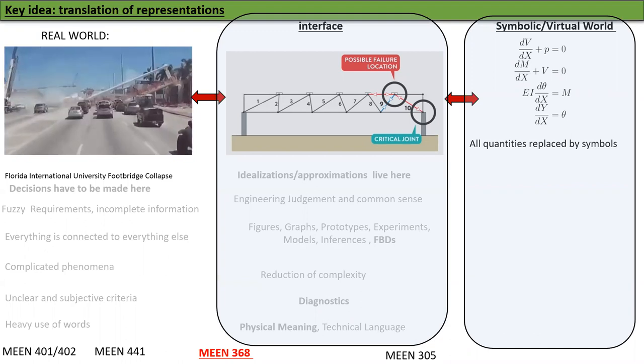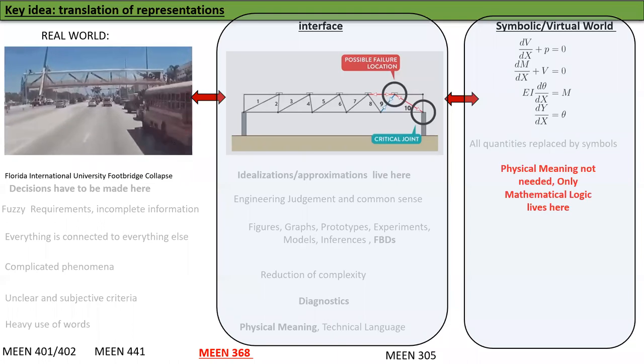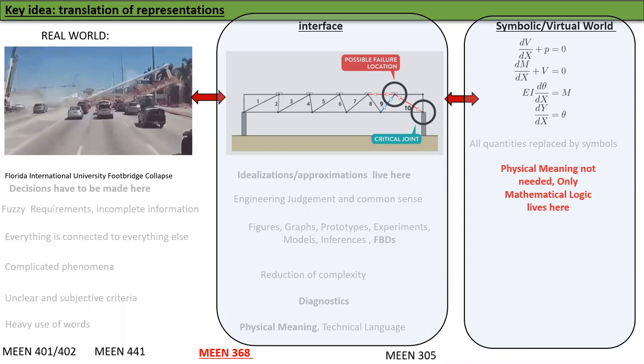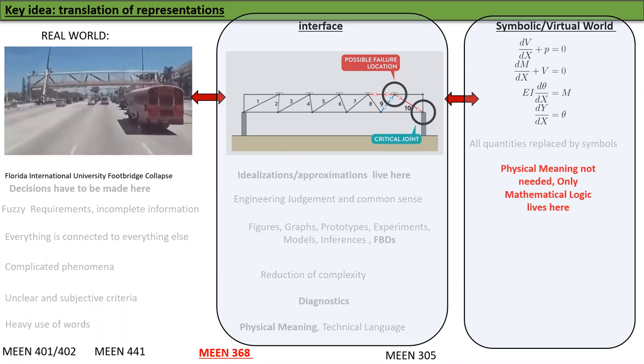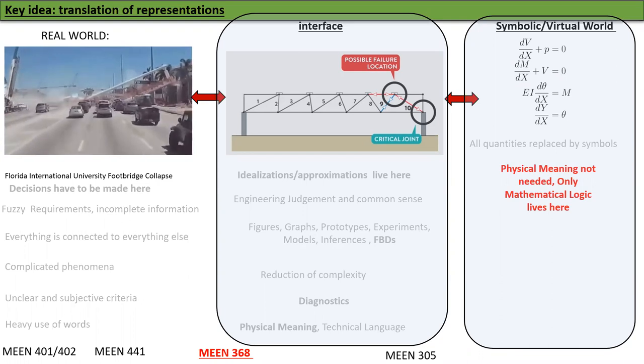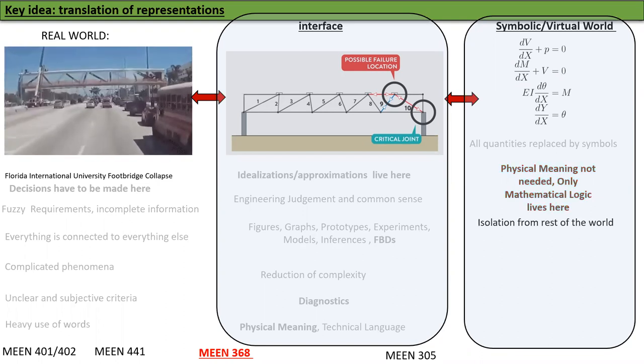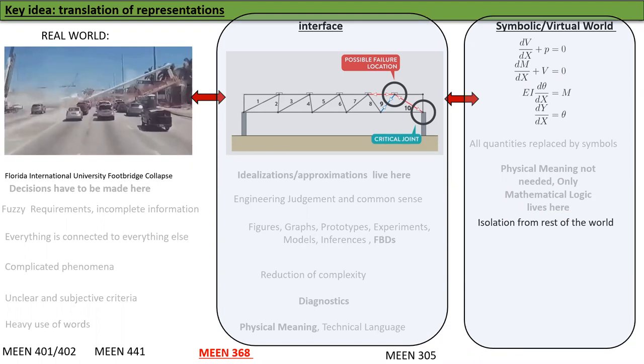And once you are in the symbolic world, physical meaning is not needed. The primary purpose of the symbolic world is to do mathematical logic. We want to keep our reasoning here purely logical and it is isolated from the rest of the world. So this is where we live.